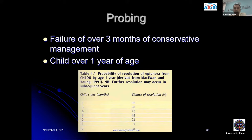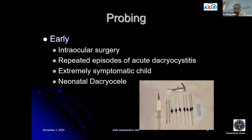Some groups advocate earlier probing between six to nine months of age. Early probing is indicated when the child requires intraocular surgery such as cataract surgery with concomitant acute dacryocystitis, repeated episodes of acute dacryocystitis, an extremely symptomatic child, or a neonatal dacryocystocele.